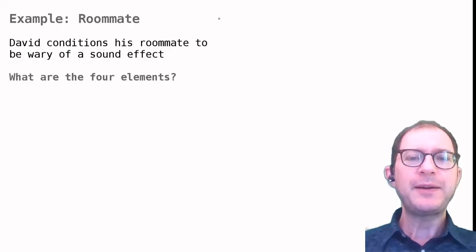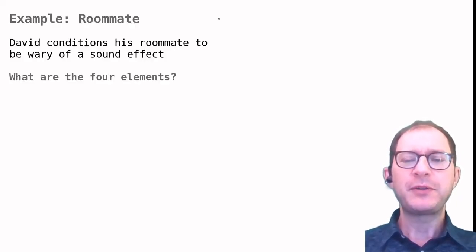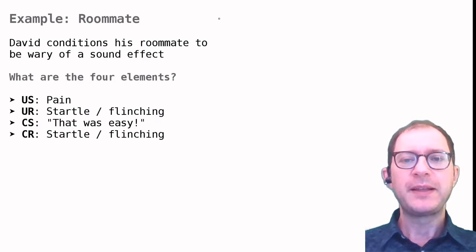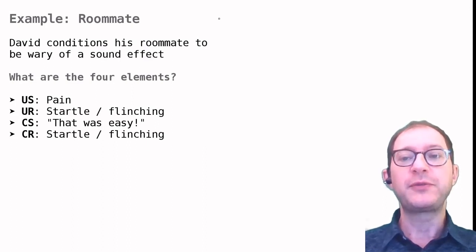By the end of the video, Pavlov's theory worked. By now the four elements of this Pavlovian conditioning demonstration should be clear. The US is the mild pain from the airsoft gun. The UR is a startle or flinching reaction. The CS is the 'that was easy' sound effect. And the CR again is a startle or flinching.